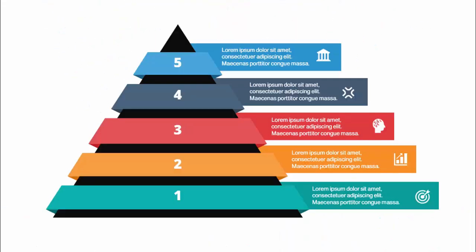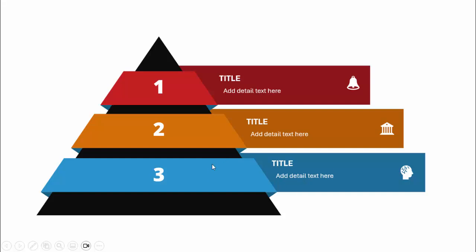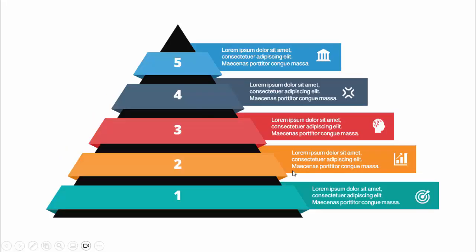In today's tutorial I'm going to show you how to create this pyramid with five options. I have created a pyramid shape — a triangle — then added option one with the text and icon, and options two, three, four, five with a different color combination. I've also created one more slide where I've used only three options, so you can see three and five options here.